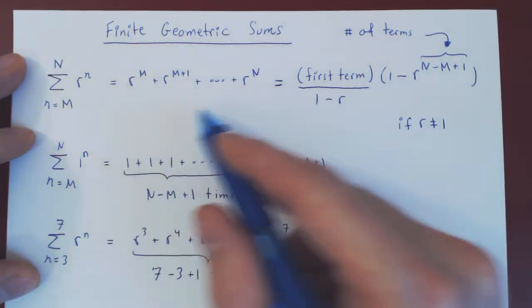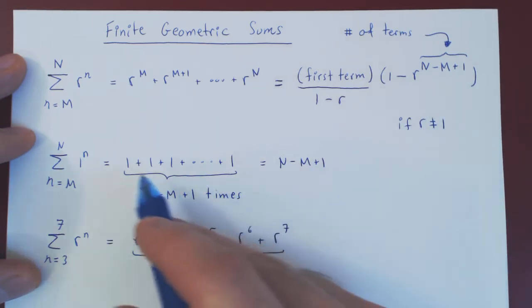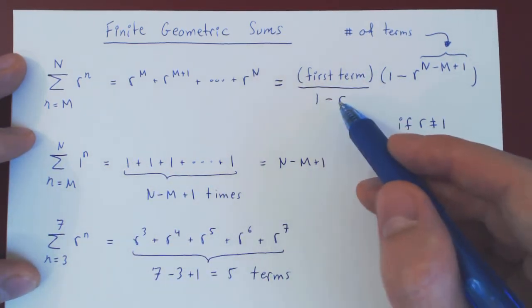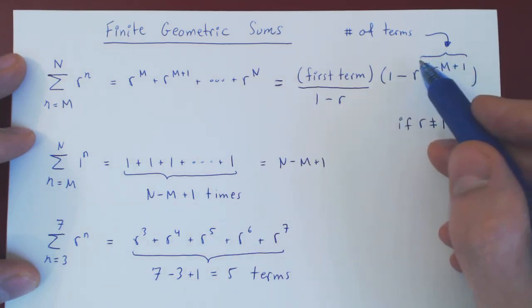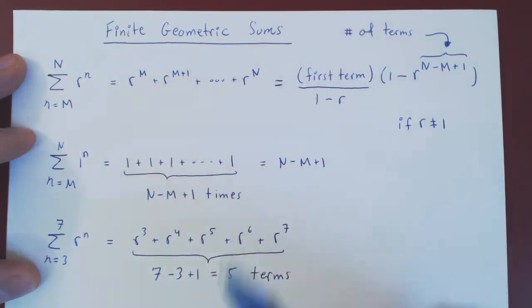So when you have a finite geometric sum, and you want to evaluate it, if it's not the trivial case when r is 1, then it's just the first term over 1 minus r times 1 minus r to the exponent, that is simply the number of terms that you are summing.